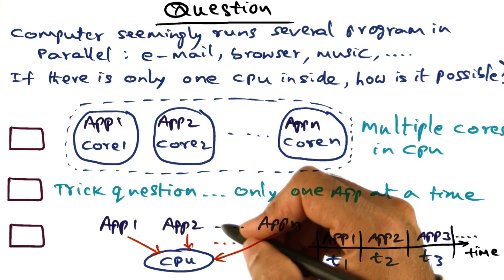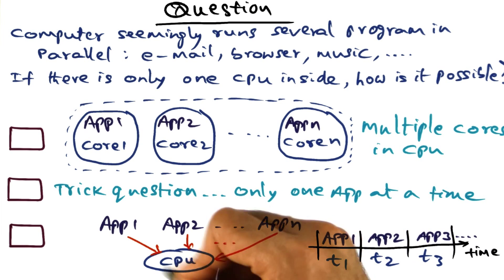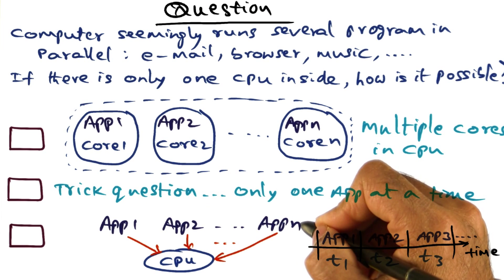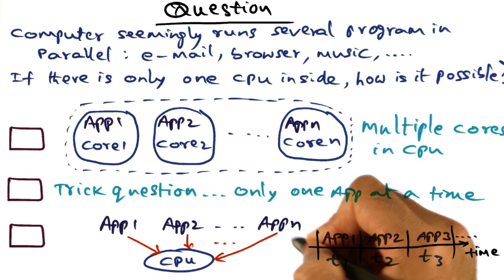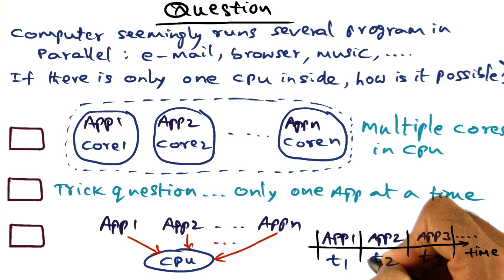The third choice says that there is only one CPU, there are multiple applications, but these applications share the CPU through the operating system. So for different time units, different applications are running on the CPU.